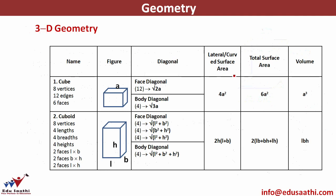For a cuboid, the curved surface area is 2H(L + B), given by the perimeter of the base 2(L + B) into height. The total surface area is the curved surface area plus the area of base and area of top. Volume is L × B × H. The face diagonals are √(L²+B²), √(B²+H²), or √(L²+H²) depending on which face. There are 12 face diagonals divided into 3 categories of 4. The body diagonal is √(L²+B²+H²), which is also the length of the longest rod that can be placed inside the cuboid.